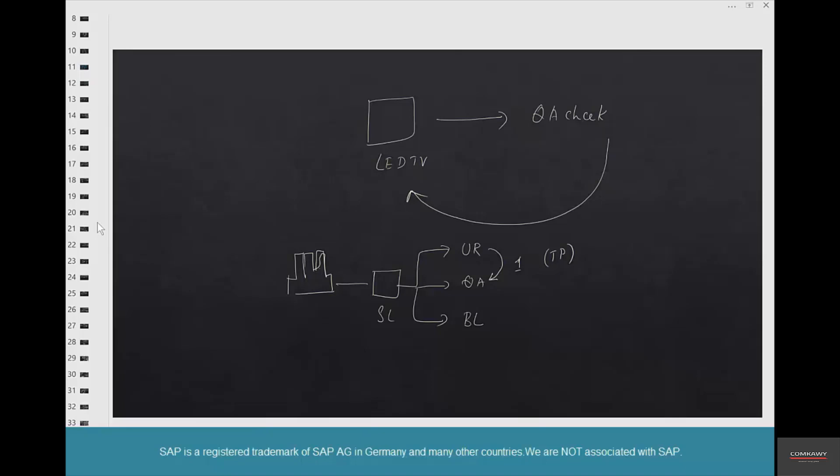Do your quality check and move it back using a reversal. Doesn't matter what that movement type is, we've already seen all the movement types associated with moving stock from unrestricted to quality, from quality to blocked, and vice versa. That's one option. That way, nobody can sell the TV; it's in quality.